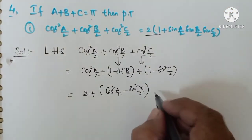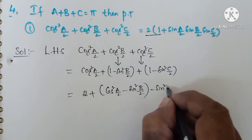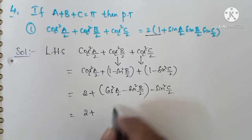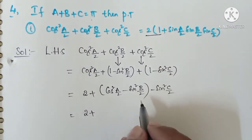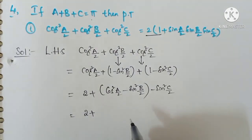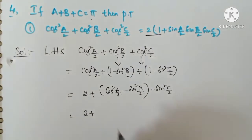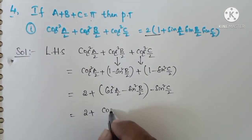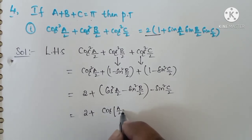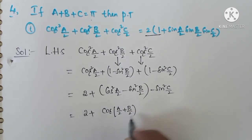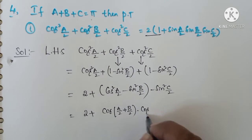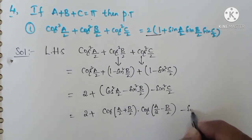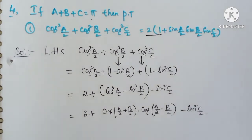Now we apply the compound angle formula: cos squared a minus sin squared b equals cos(a plus b) into cos(a minus b). We also have the term minus sin squared c by 2 remaining.